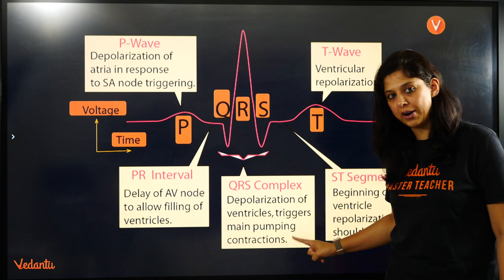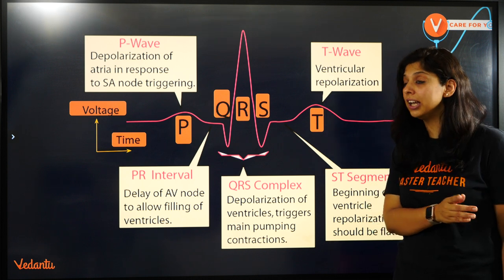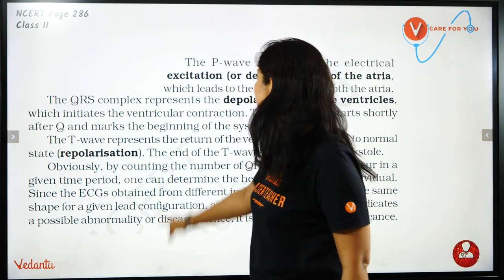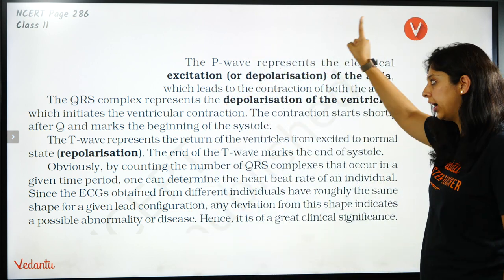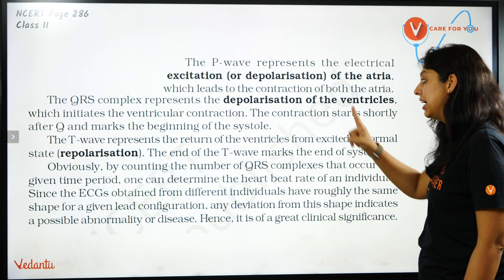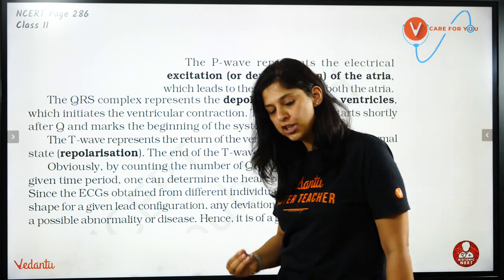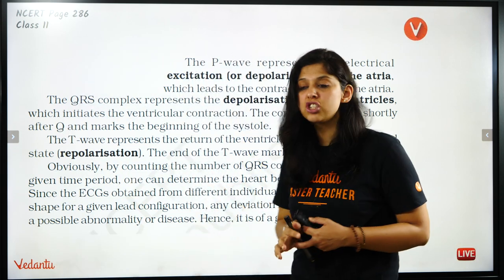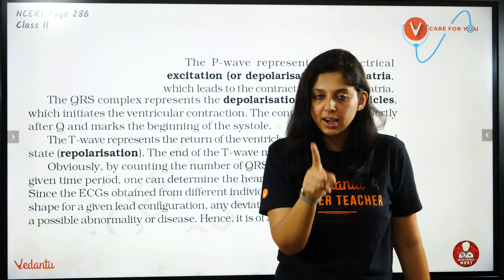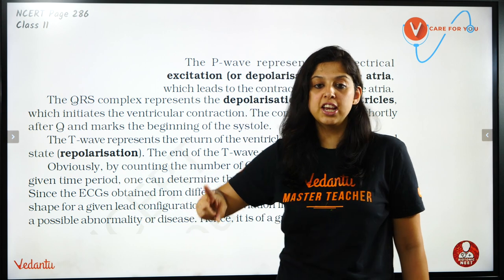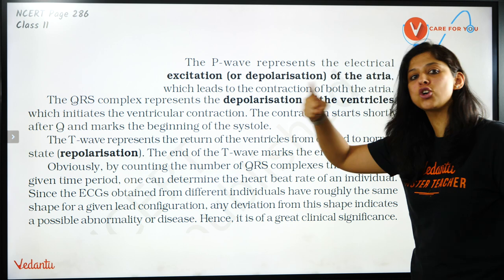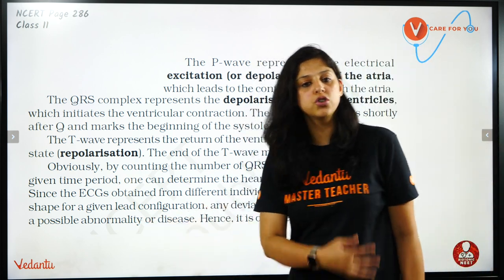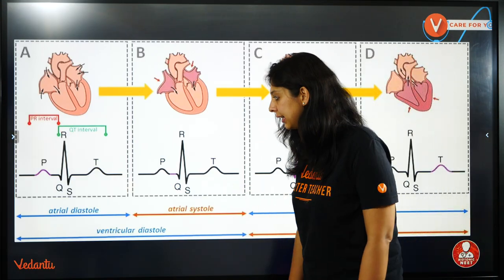The QRS complex is the contraction or depolarization of the ventricles. The right ventricle sends blood to the pulmonary artery, and the left ventricle sends blood to the aorta. The T wave is ventricular repolarization. Between S and T is the beginning of ventricular repolarization. So: P wave is excitation or depolarization causing contraction of both atria; QRS complex is depolarization and contraction of the ventricles; T wave is when the ventricles relax after contraction — referred to as repolarization. From the QRS complex time period we can determine the heartbeat or rate of an individual, because QRS represents ventricular depolarization, which is contraction. When the ventricles contract, blood goes to the body, so we know the heart rate. If there is any change, we can detect any possible abnormality or disease of the heart.